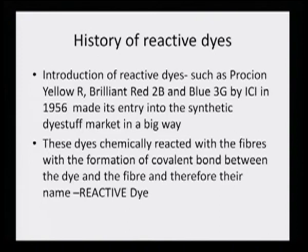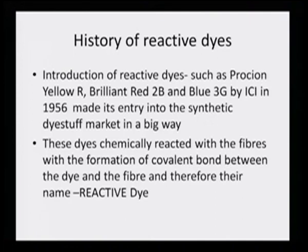Looking at the history of the reactive dyes, introduction of reactive dyes such as Procion Yellow R, Brilliant Red 2B and Blue 3G by ICI in 1956 made its entry into the synthetic dyestuff market in a big way. These dyes chemically reacted with the fibers with the formation of a covalent bond between the dye and the fiber, and therefore their name: reactive dye.